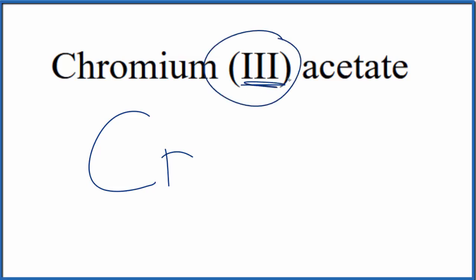And the 3, this 3 here, Roman numeral in parentheses, that means chromium is going to be 3+. It's the chromium-3-ion.